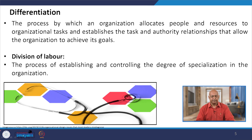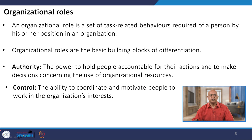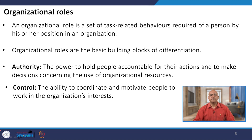First, we will take differentiation — the process by which an organization allocates people and resources to organizational tasks and establishes task and authority relationships that allow the organization to achieve its goals. Division of labor is the process of establishing and controlling the degree of specialization in the organization. Organizational roles — a set of task-related behaviors required of a person by their position — are the basic building blocks of differentiation.